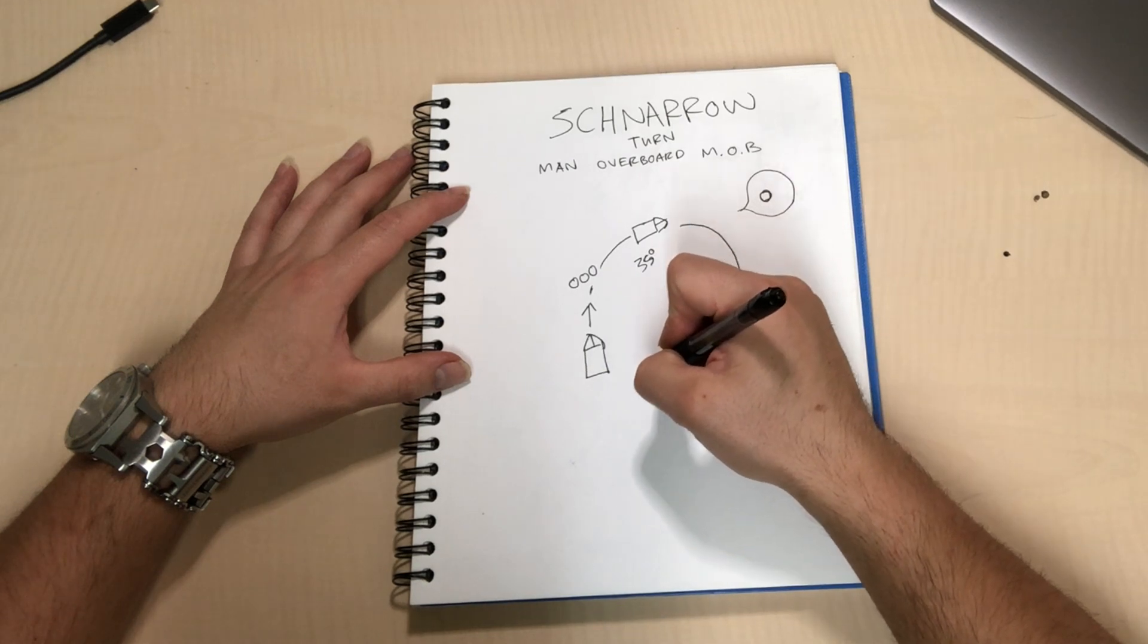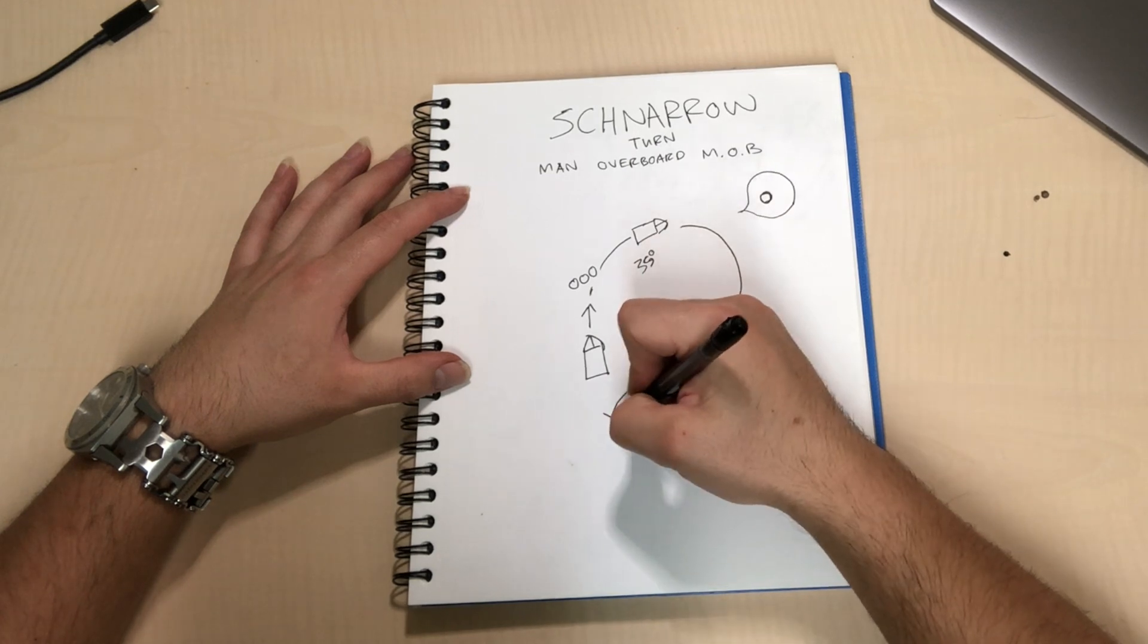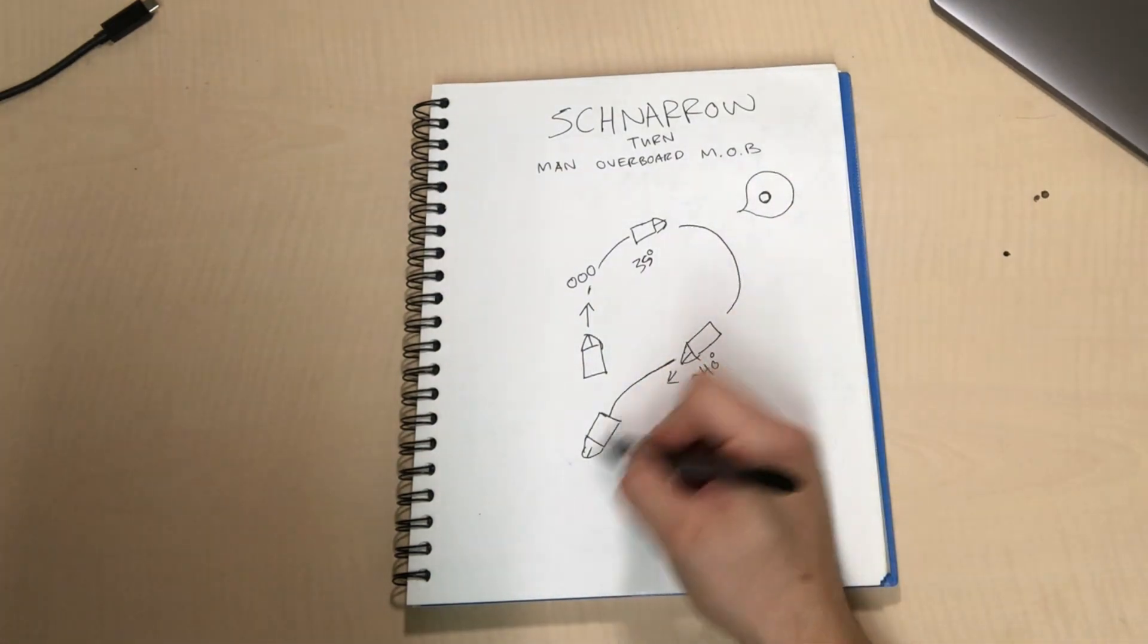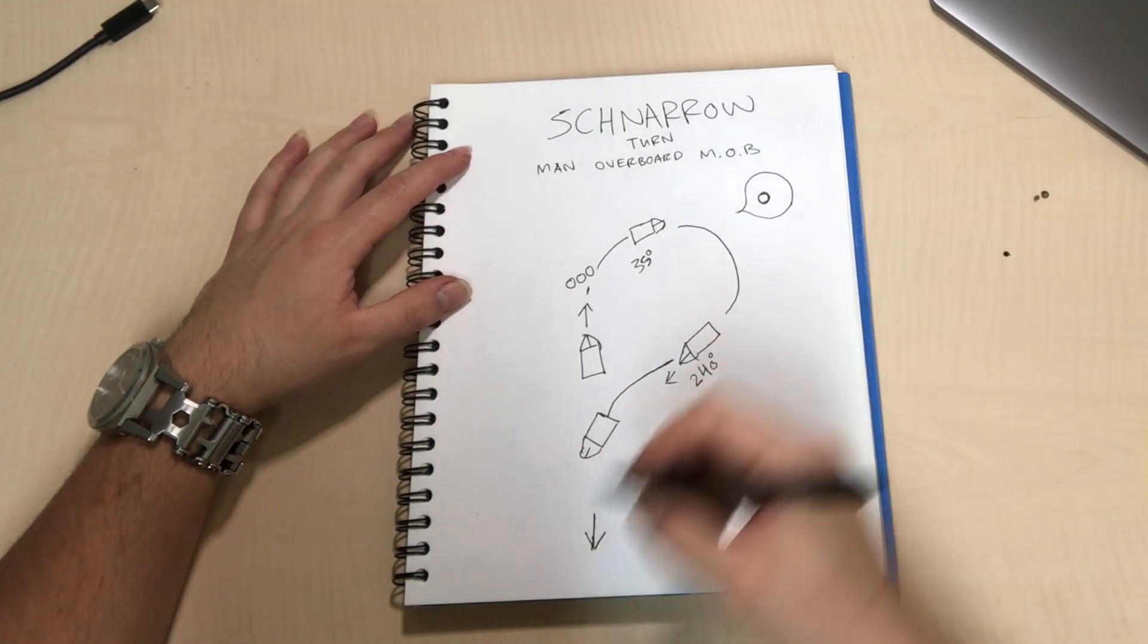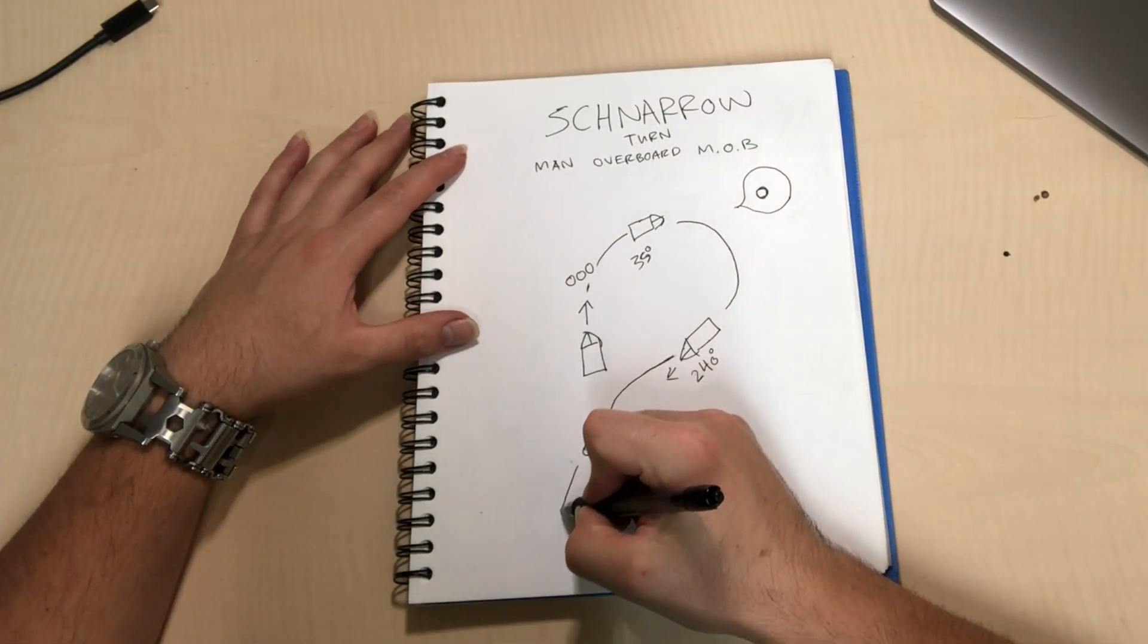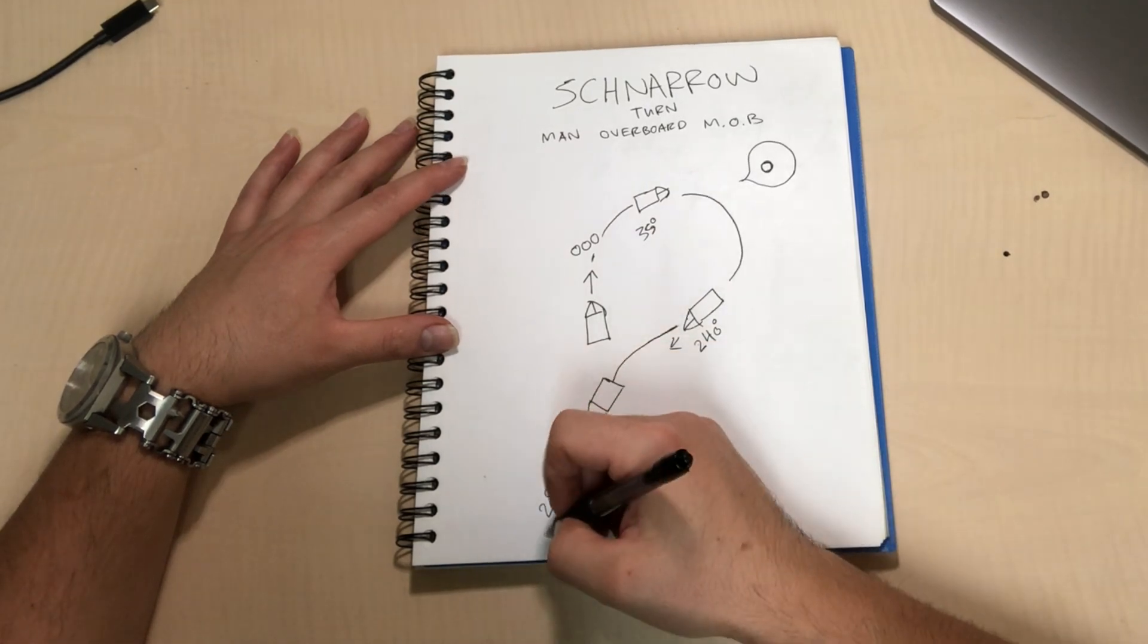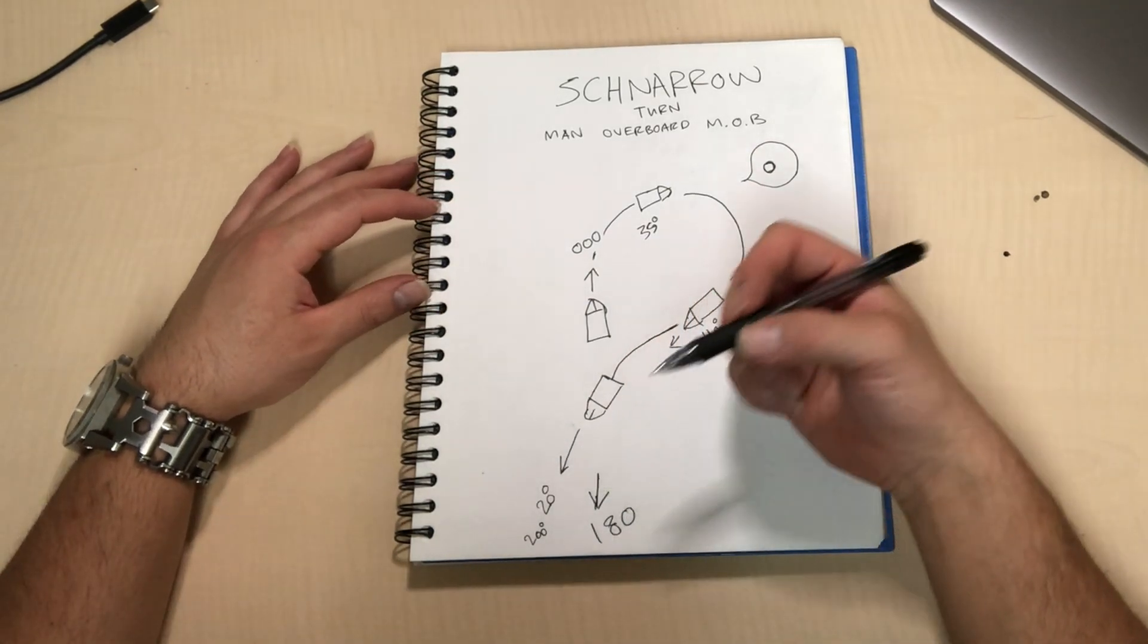So that is gonna basically shift you back over. And around this point, this is obviously the reciprocal of zero zero zero is 180. Now when you are 20 degrees from your reciprocal course, which would be 200, 20 degrees from 180 would be two zero zero, you're gonna go midship.